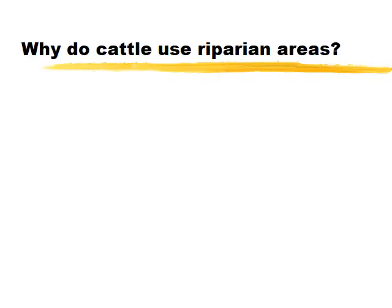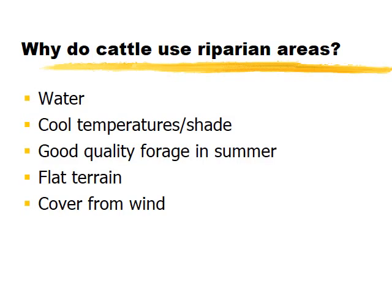Cattle are attracted to riparian areas for several reasons: there's water there; they're usually cooler with shade, which is attractive in summer; there's good quality forage especially when uplands get dry in summer; the topography is flatter in riparian areas; and there may be cover from wind. This is why we also find roads, hiking trails, and railroad beds along riparian areas.